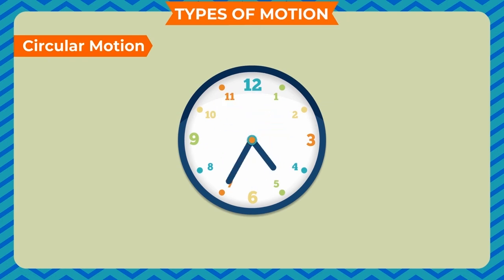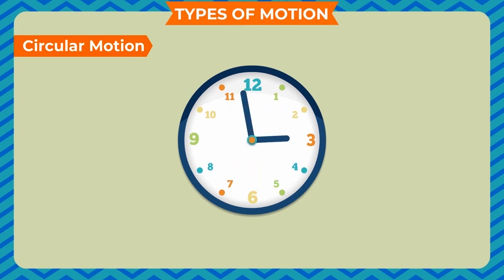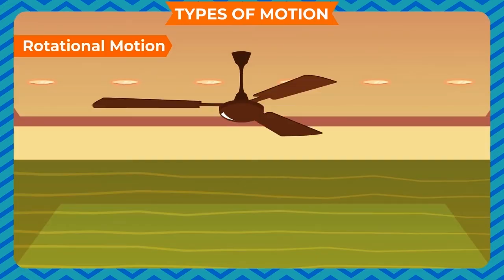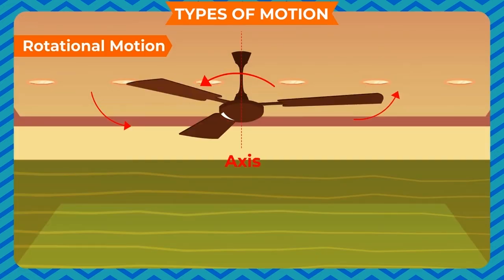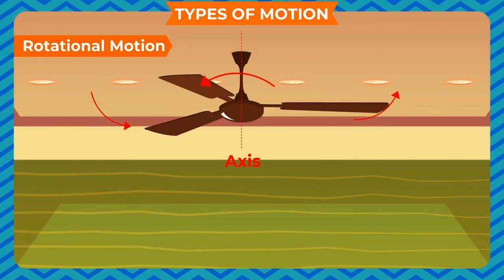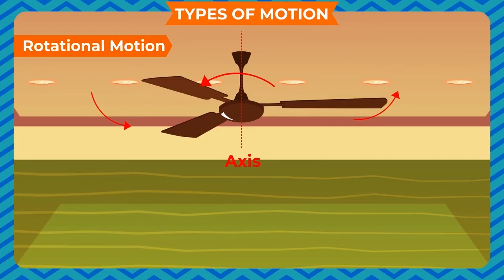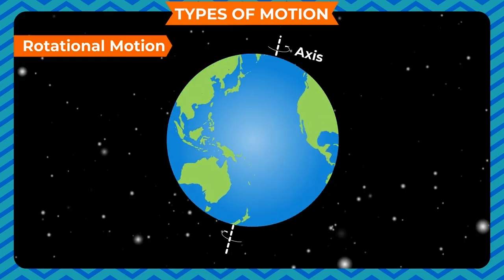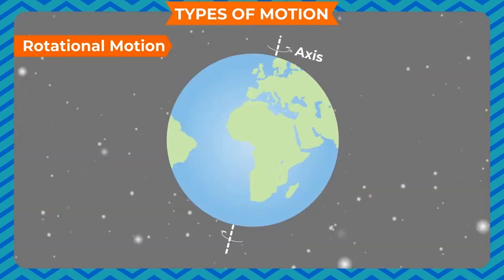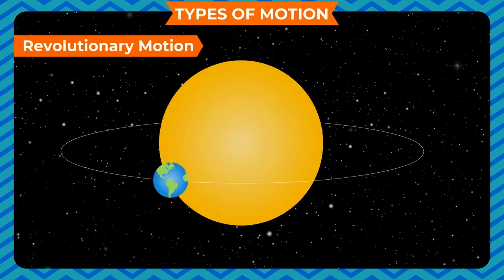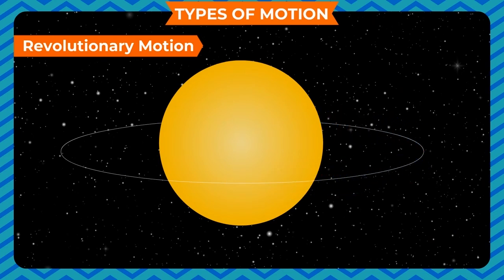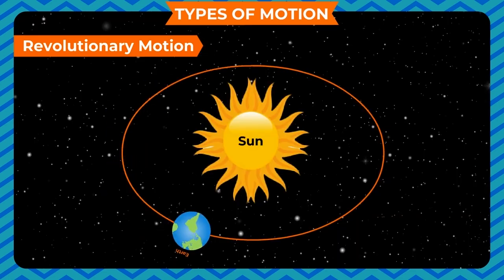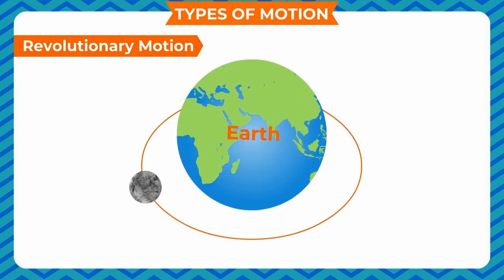Circular motion: when an object moves around a fixed point in a circular path, the motion of the object is called circular motion. Circular motion is basically of two types. Rotational motion: when an object moves around a fixed point or fixed axis in a way that its position is not changing, this is called rotational motion. Examples include the rotation of the earth about its axis, rotation of a top, and motion of the blades of a fan. Revolutionary motion: when an object moves along a fixed circular path, this is called revolutionary motion. Examples include the motion of the earth around the sun and the motion of the moon around the earth.